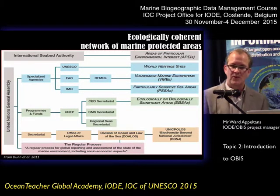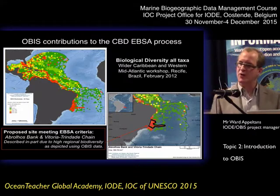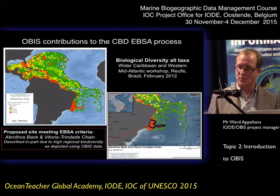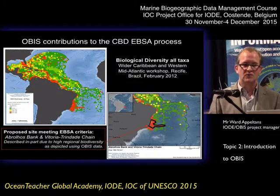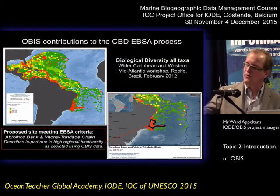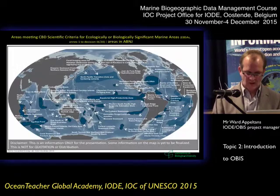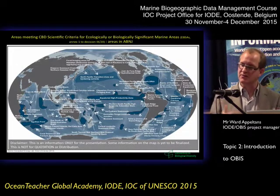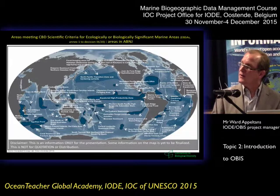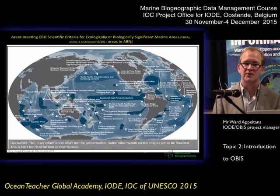We were asked by the Conference of Parties of the CBD to support the EBSA process. They are organizing a number of regional workshops, inviting experts of the region to define the most ecologically and biologically important areas, and one of the main sources of information is OBIS. Here is an example where one of the EBSAs clearly matched the diversity data from OBIS. It's a long process — I think 75% of the ocean is covered at the moment by this process, and these are the areas approved by the countries.